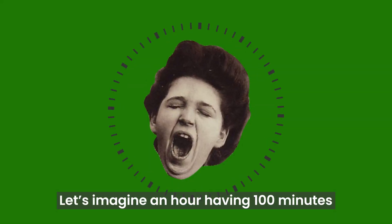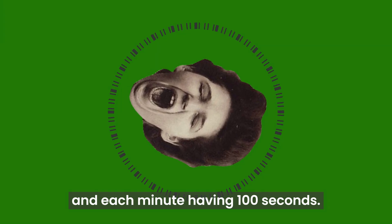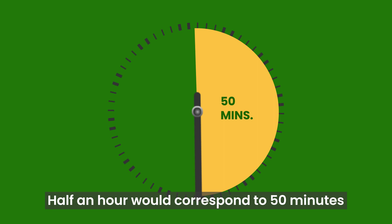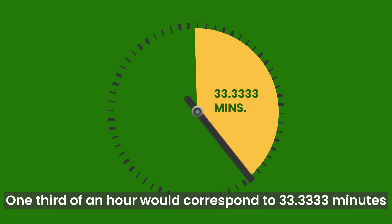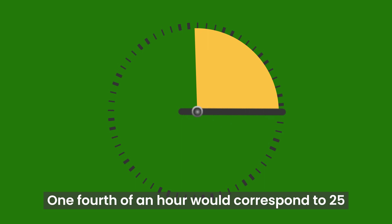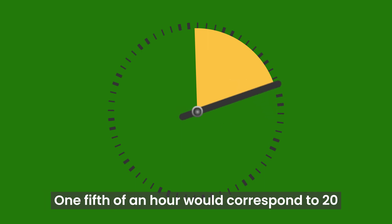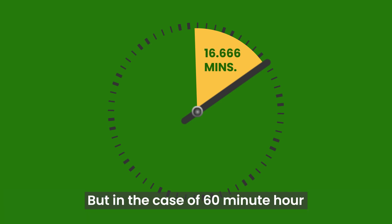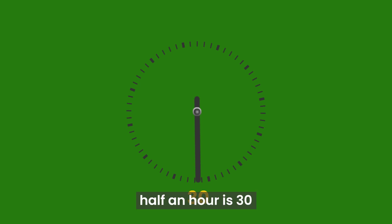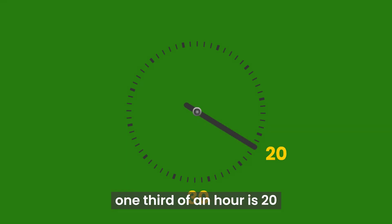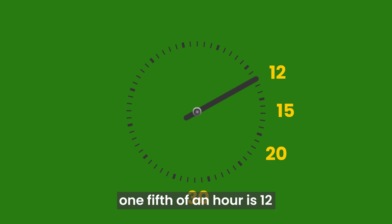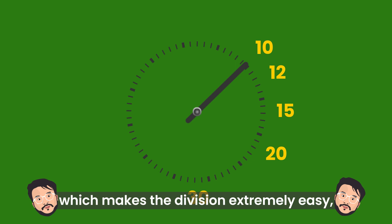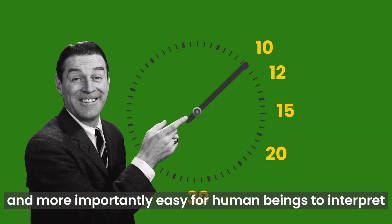Let's imagine an hour having 100 minutes and each minute having 100 seconds. Half an hour would correspond to 50 minutes. One-third of an hour would correspond to 33.3333 minutes. One-fourth would be 25, one-fifth would be 20, and one-sixth would be 16.666 minutes. But in the case of a 60-minute hour, half an hour is 30, one-third is 20, one-fourth is 15, one-fifth is 12, and one-sixth is 10 minutes — which makes the division extremely easy and, more importantly, easy for human beings to interpret.